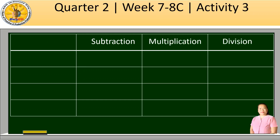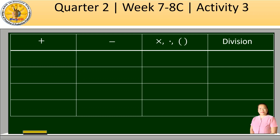For addition, we use the plus sign. For subtraction, we use the minus sign. For multiplication, we use the dot or a parenthesis. Since we are now dealing with variables, we no longer use x to represent multiplication — we use the dot or the parenthesis. For division, we have the division sign or fraction bar.